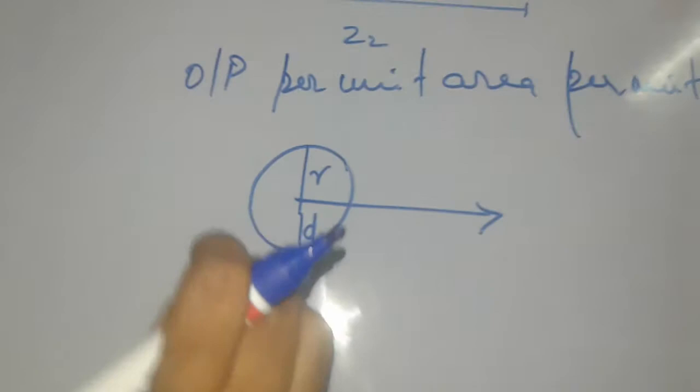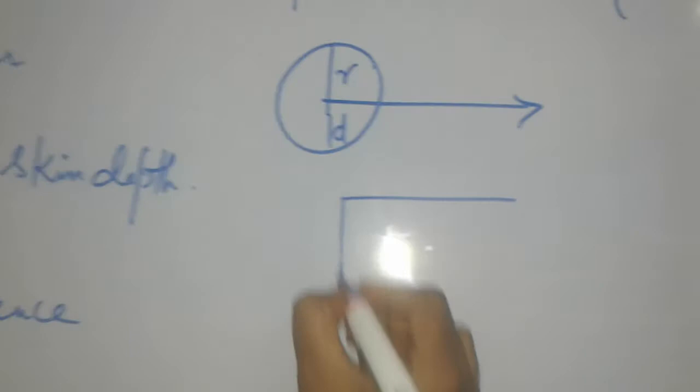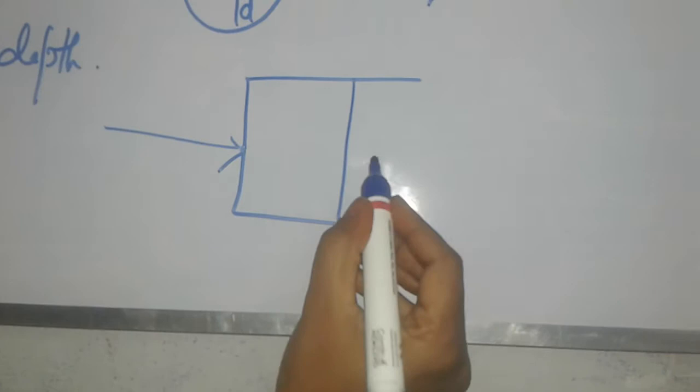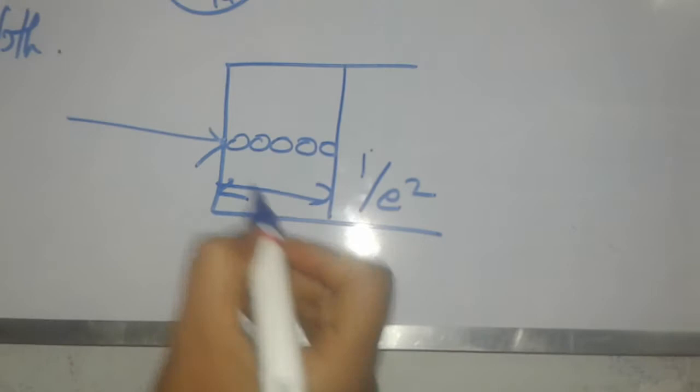Next is the depth of focus, also called the skin depth. As we have discussed, if this is the work piece and the laser source is hitting on the surface, the atoms absorb it and the intensity decreases to 1/e² times. The thickness of the material over which this happens is called the skin depth D.